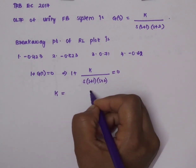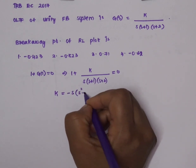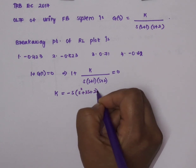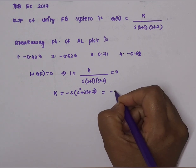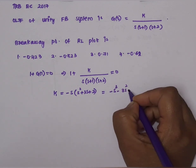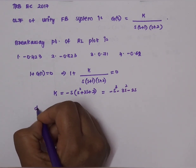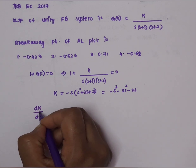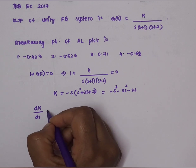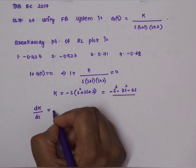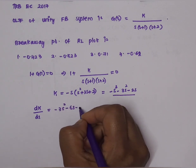From this, K = -s(s+1)(s+2). Expanding: s(s+1)(s+2) = s³ + 3s² + 2s, so K = -(s³ + 3s² + 2s). To find the break away point, we set dK/ds = 0, giving -3s² - 6s - 2 = 0.